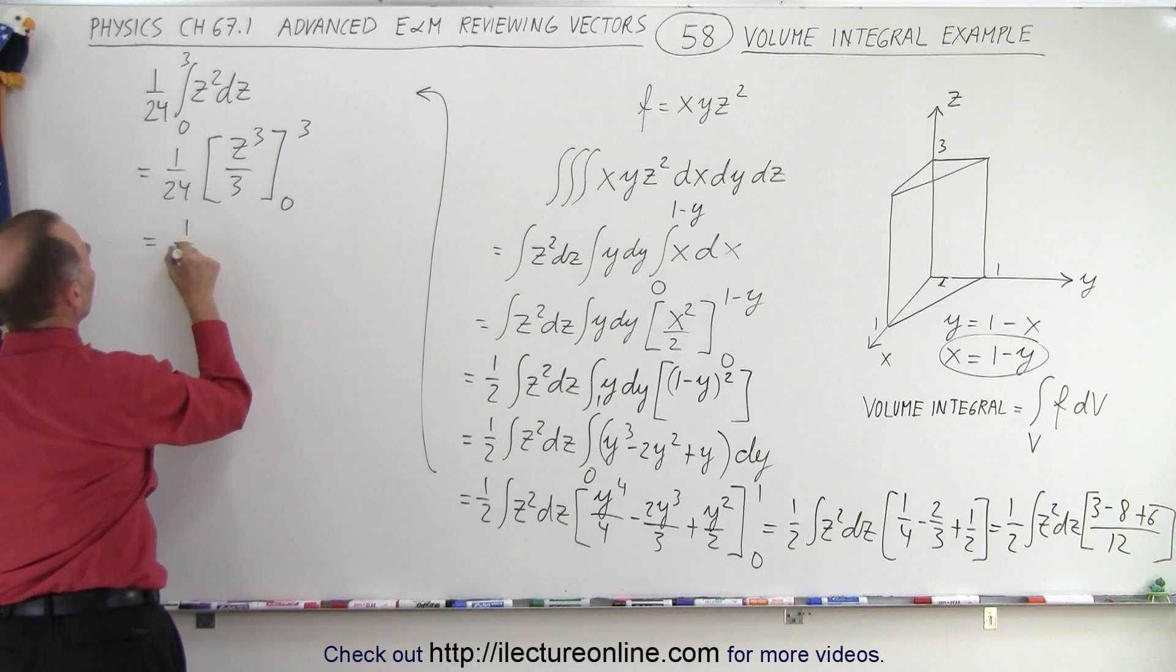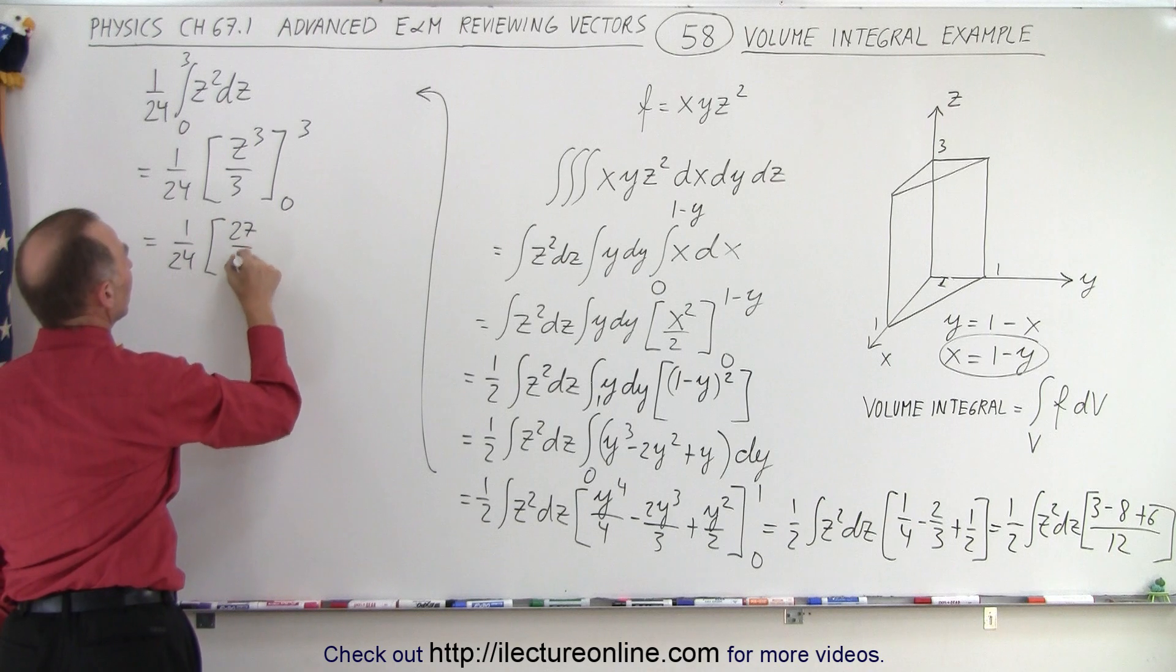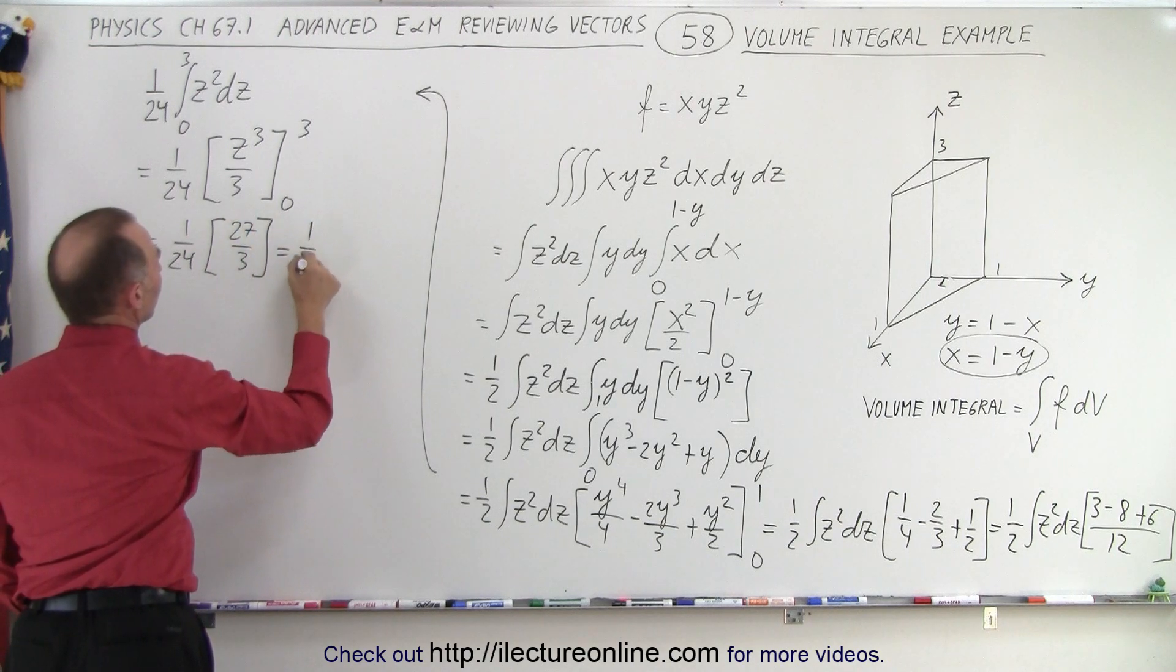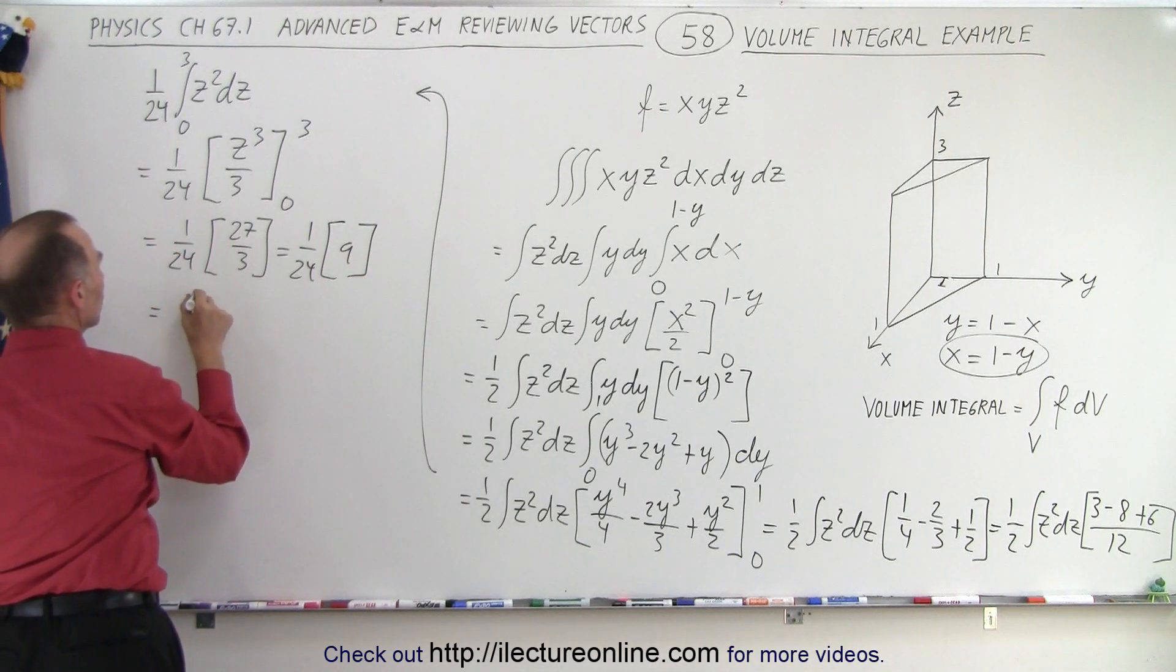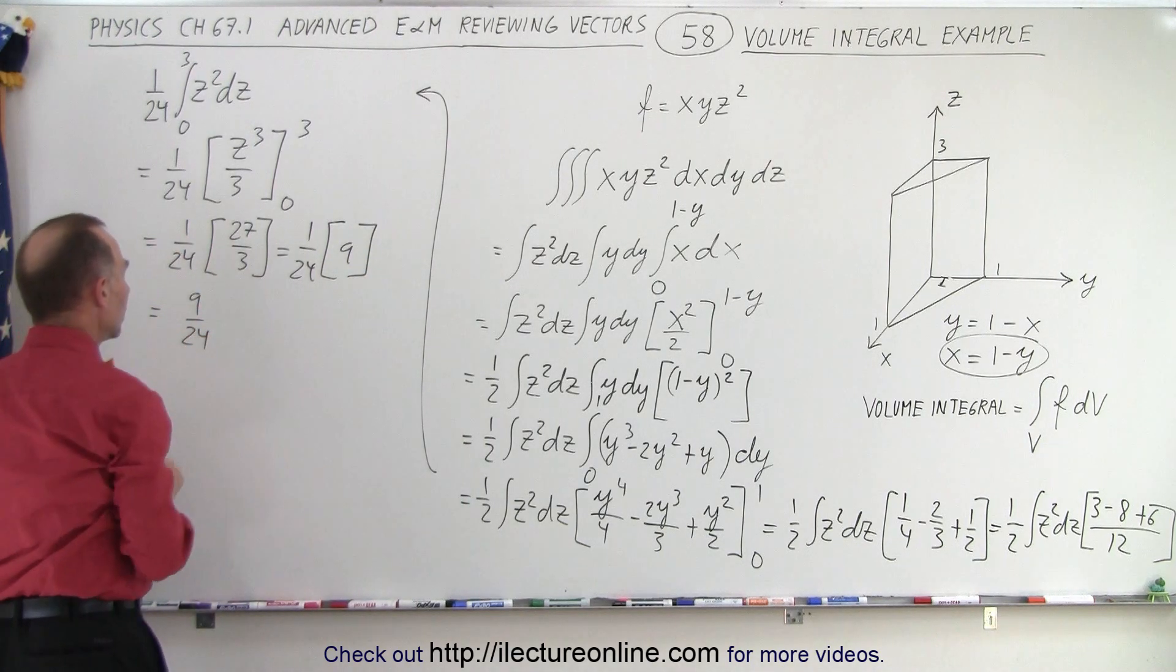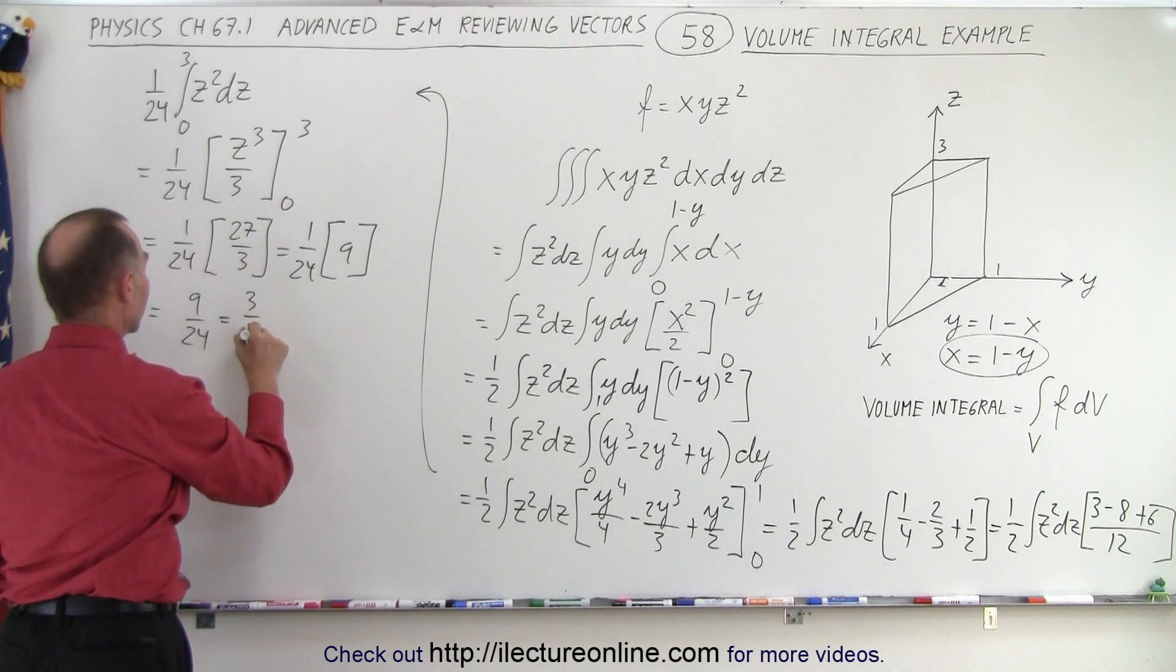So that's equal to 1 over 24 times 27 over 3, which is equal to 1 over 24 times 9, which is equal to 9 over 24. Now they both divisible by 3, so this is equal to 3 over 8.